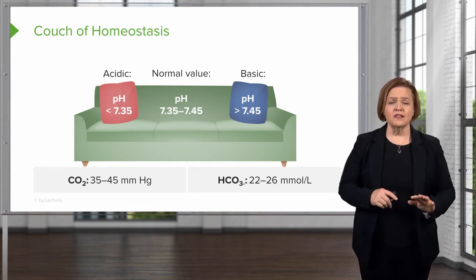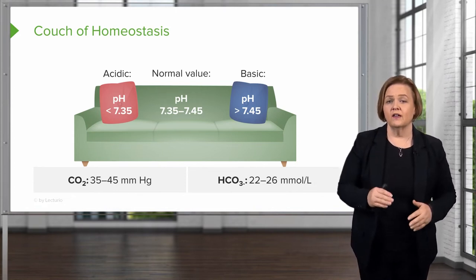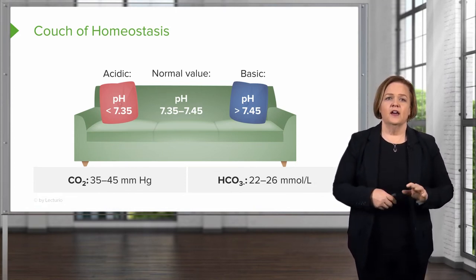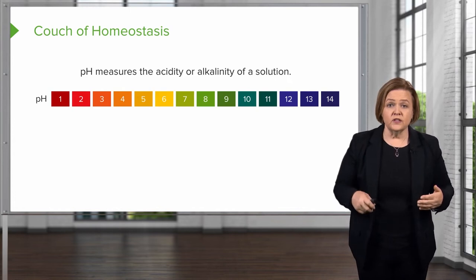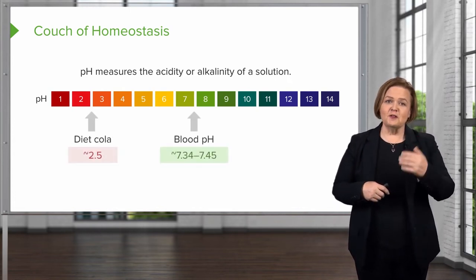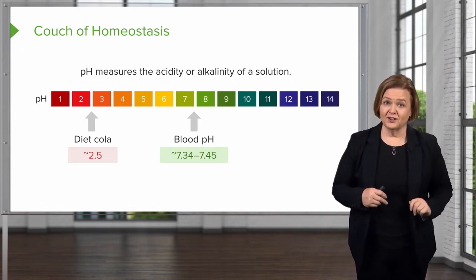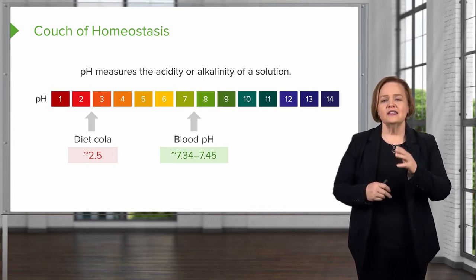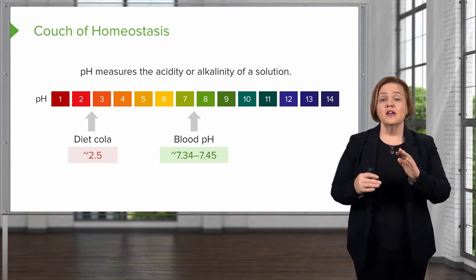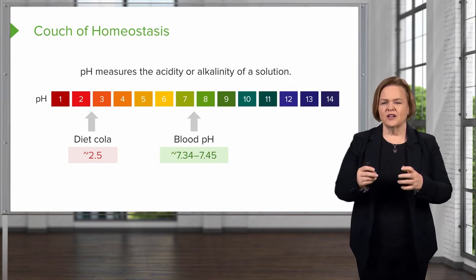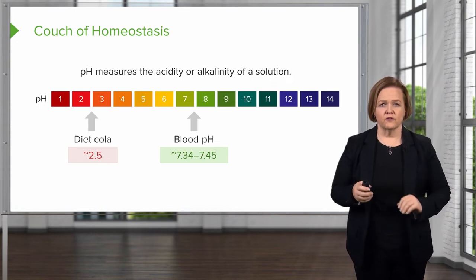We'll start pretty slow in the beginning to make sure you really have these concepts down well, then we'll pick up the pace toward the end. We're talking about the couch of homeostasis — we talked about pH, the same pH you did in junior high science labs. The pH of diet Coke is about 2.5, and for a lot of you, that's what's running in your veins. pH of blood is 7.35 to 7.45. Different labs may have slightly different values, but we're going to stick with 7.35 to 7.45 as normal.